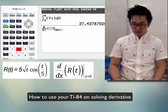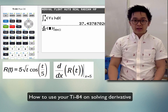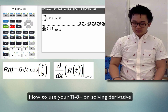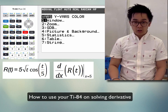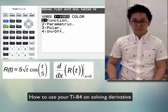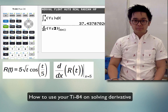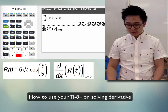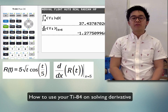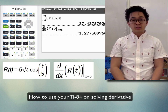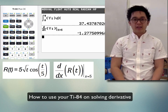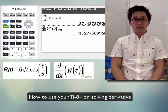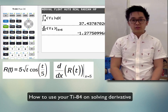Push X for dx, then select r(t) which is Y₁ — push VARS, Y-VARS, and Y₁ — at x equal to 5. The TI-84 will compute the derivative of the function at that given x value. This is how we use our TI-84 to compute the integral and the derivative of a function.